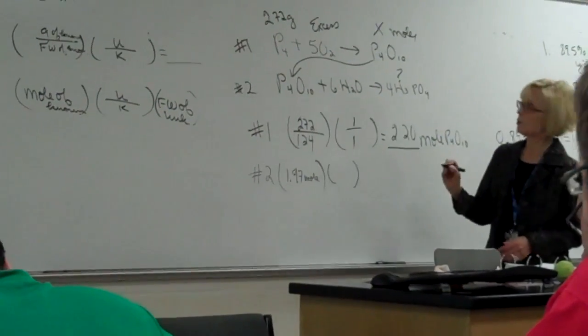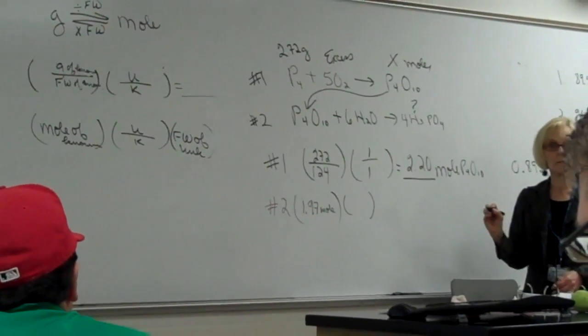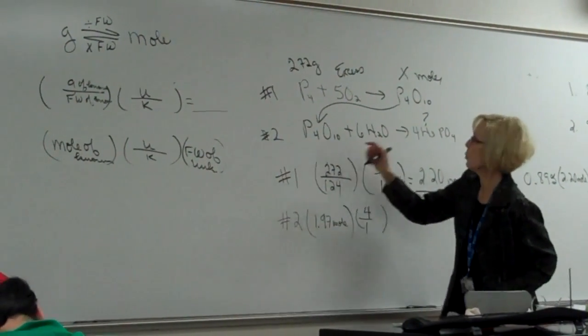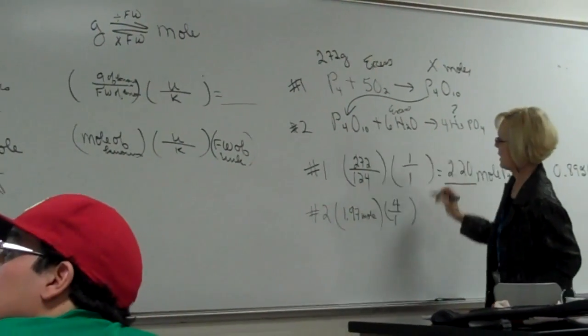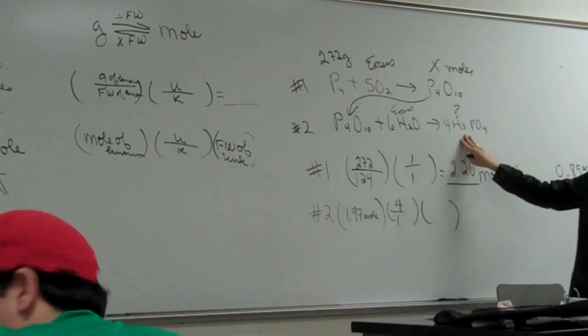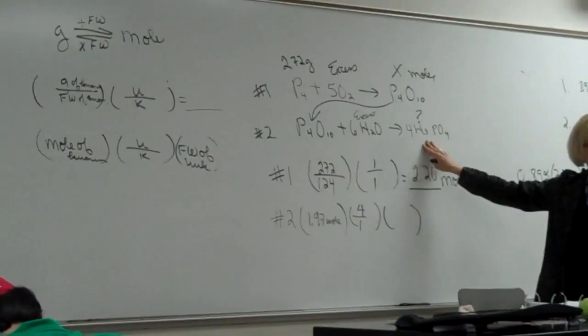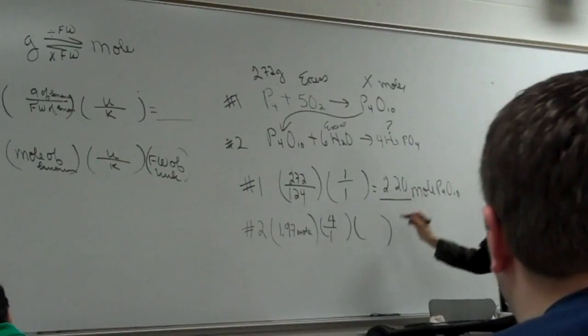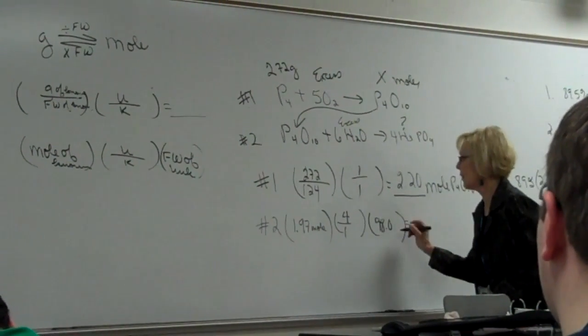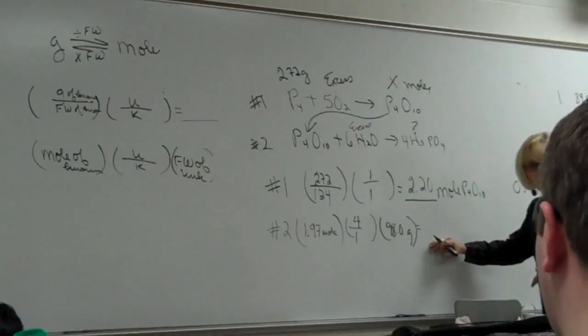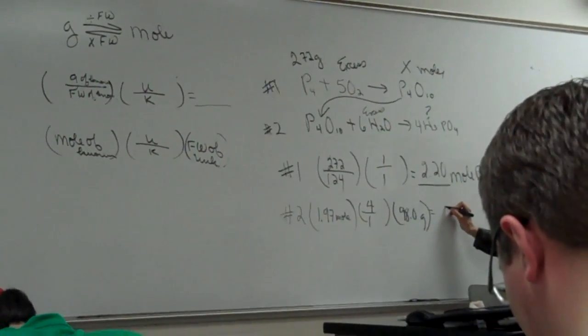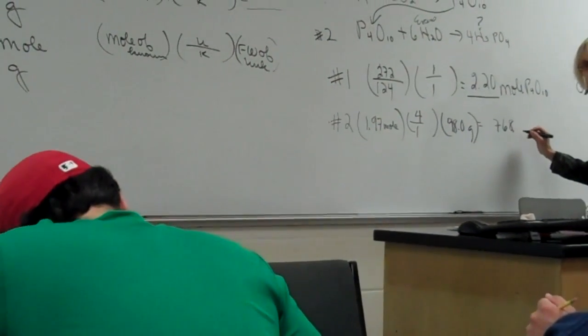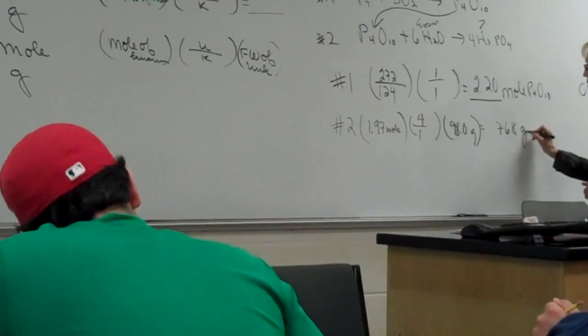Mole ratio, anybody shout it out. 4 to 1. We're assuming we have plenty of water. Then I'm going to need a formula weight here. Formula weight of phosphoric acid? 98.0. That's going to give us grams. 768 grams.